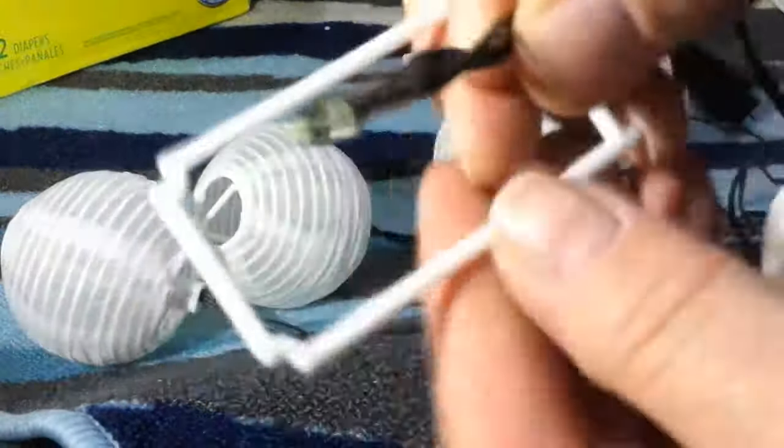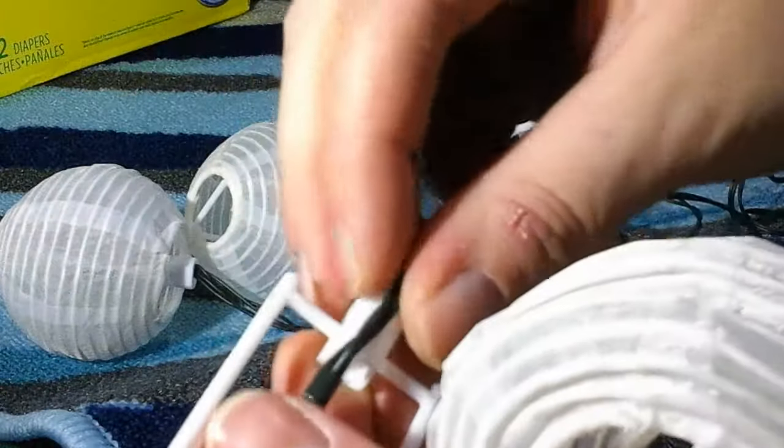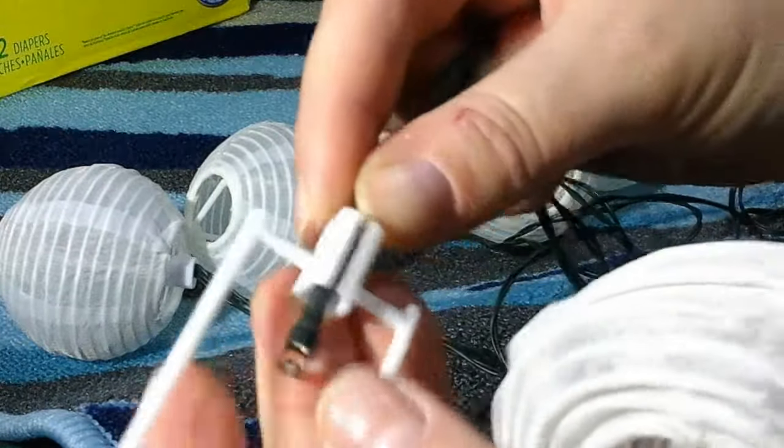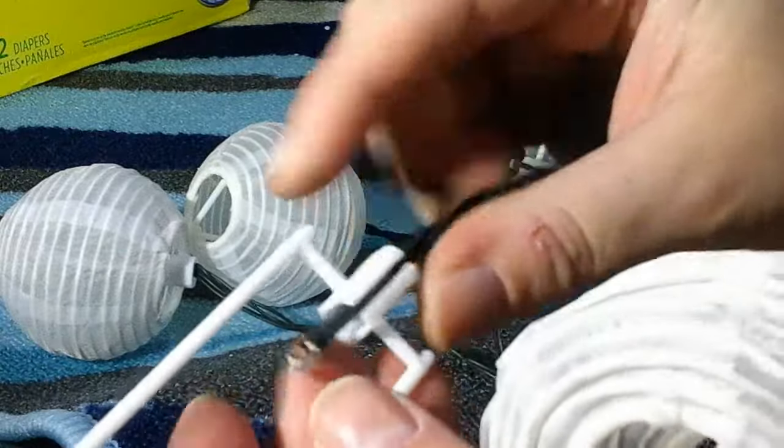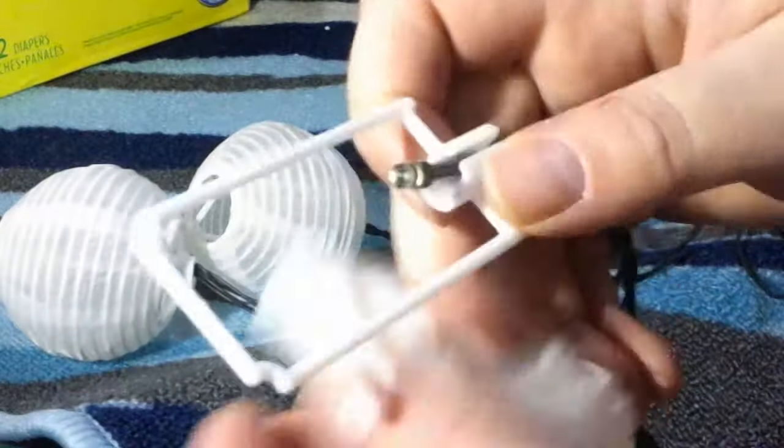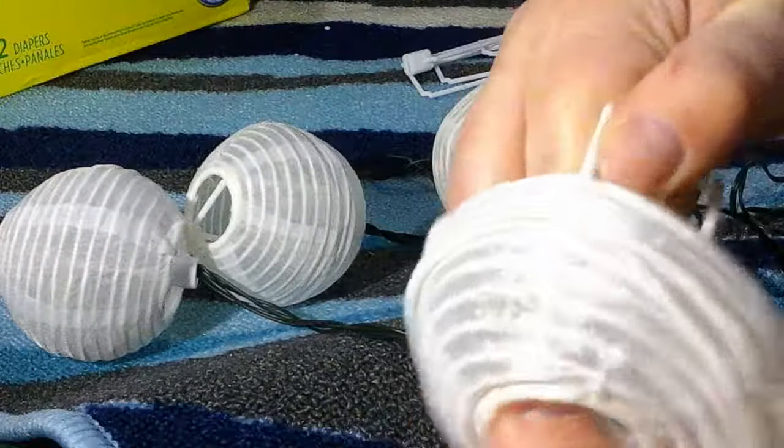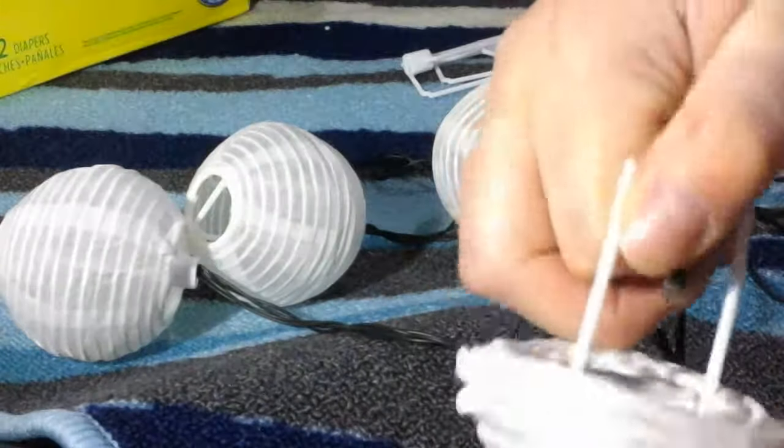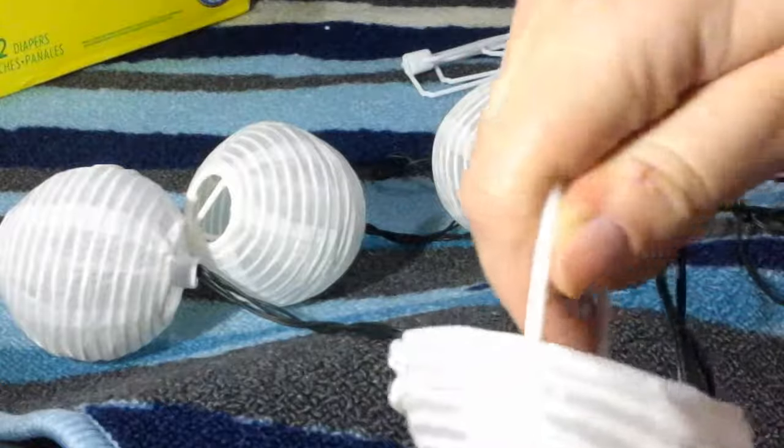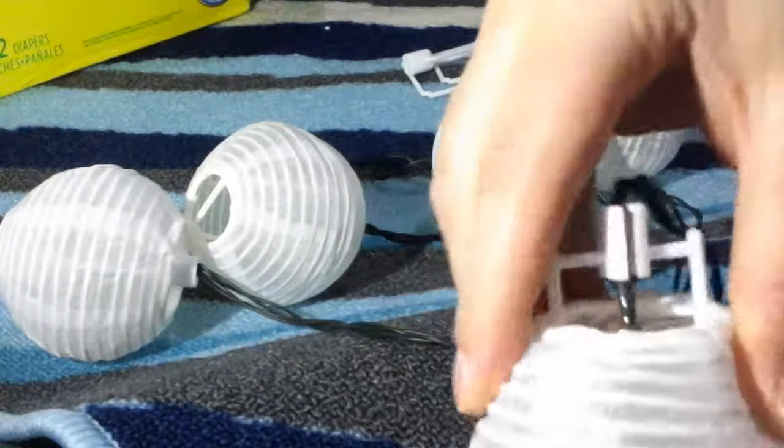You take the light and you line it into this and pull it up, make sure it's snugly in there. And then you take this piece and you pop it into the inside like so, and you hold it there to make sure that it stays firm in place.